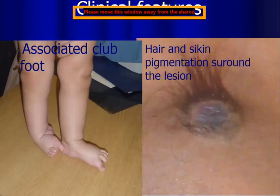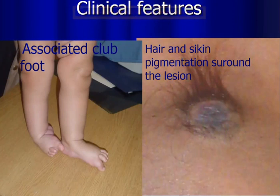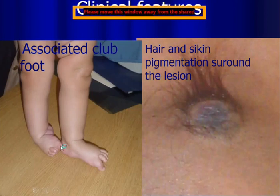Sometimes spina bifida is associated with musculoskeletal anomalies, like club foot as seen in this picture. Sometimes there is a skin marker at the site of spina bifida, especially with occulta — we can see a tuft of hair at the site of the defect or hyperpigmentation of the skin surrounding the lesion.